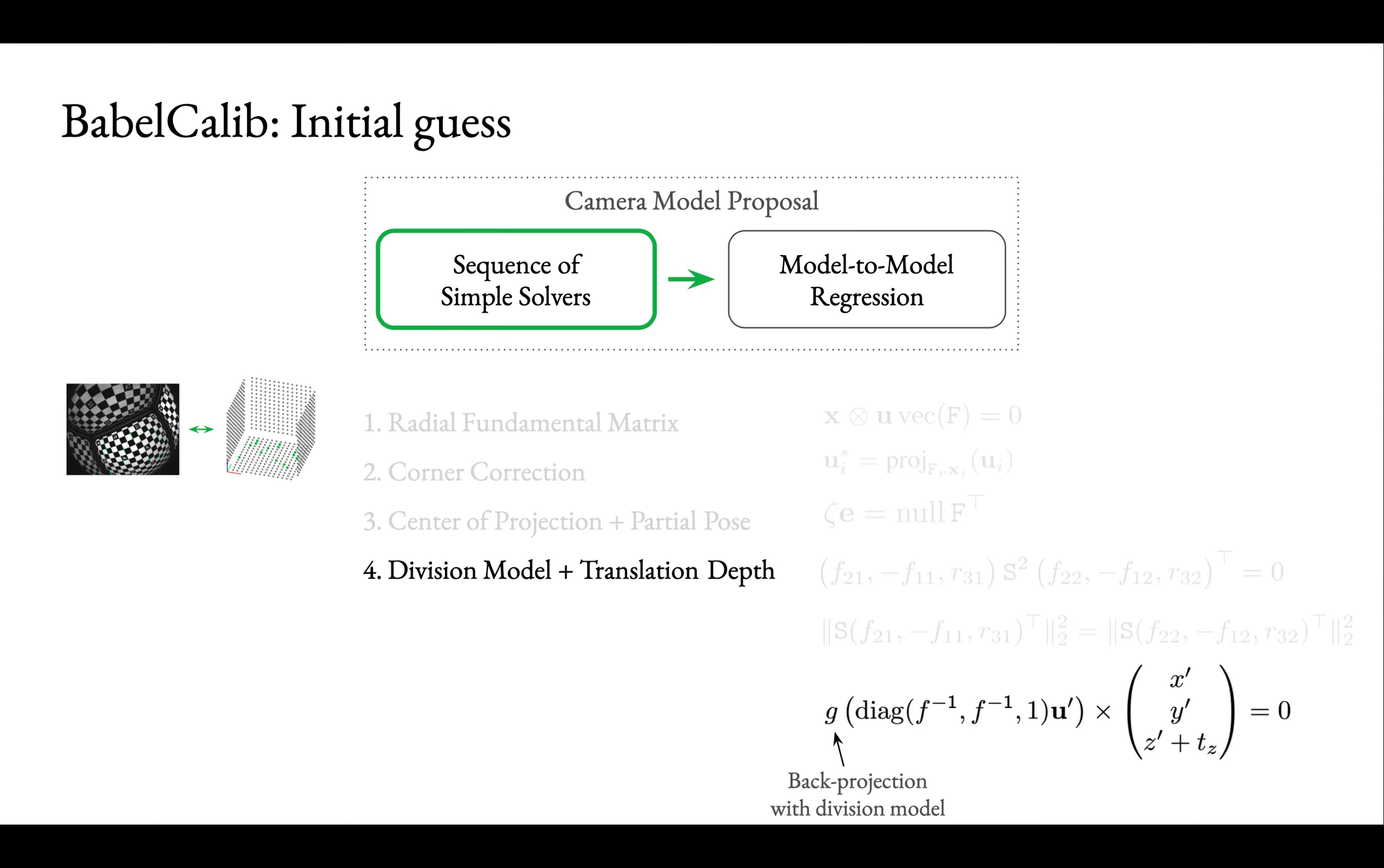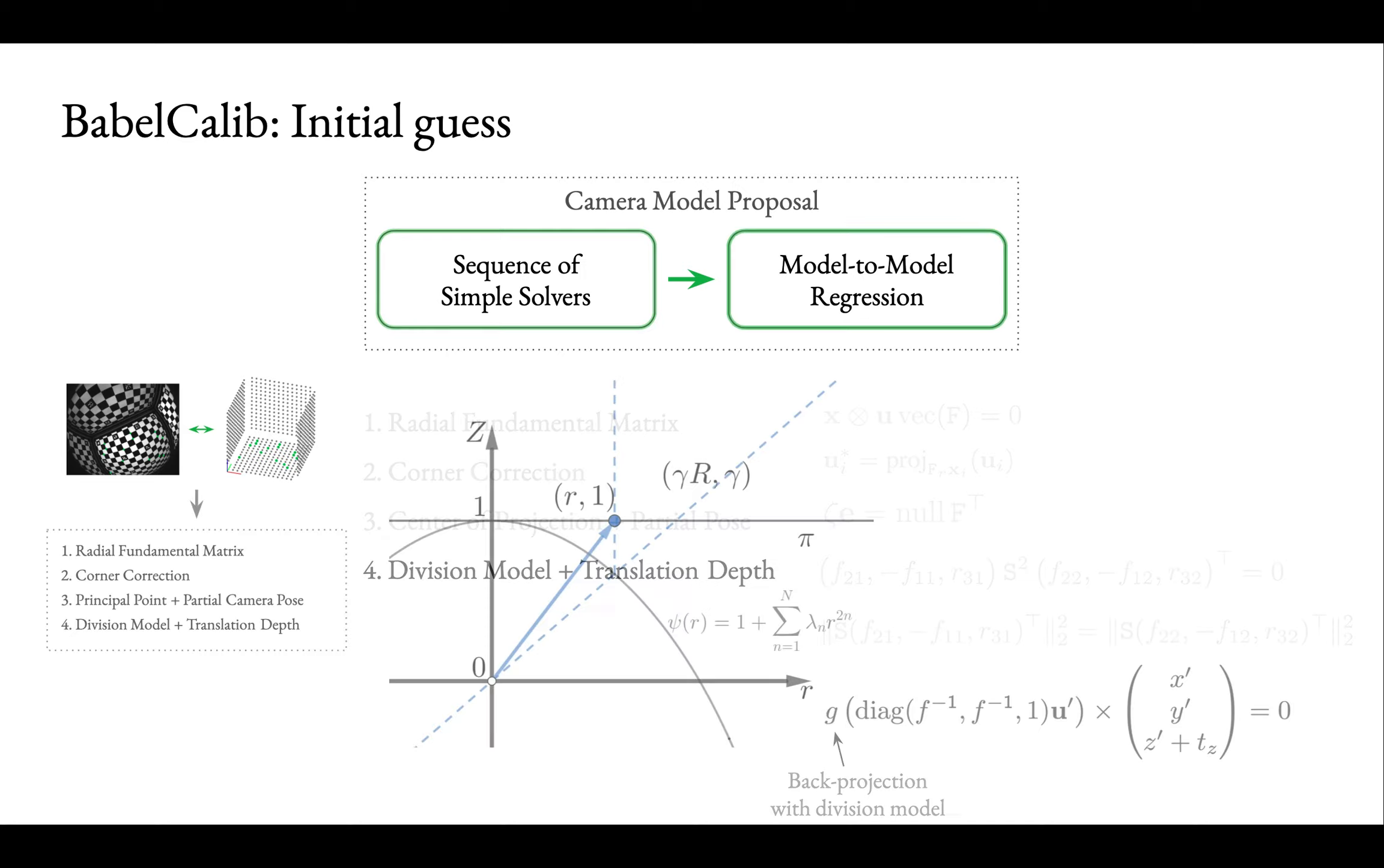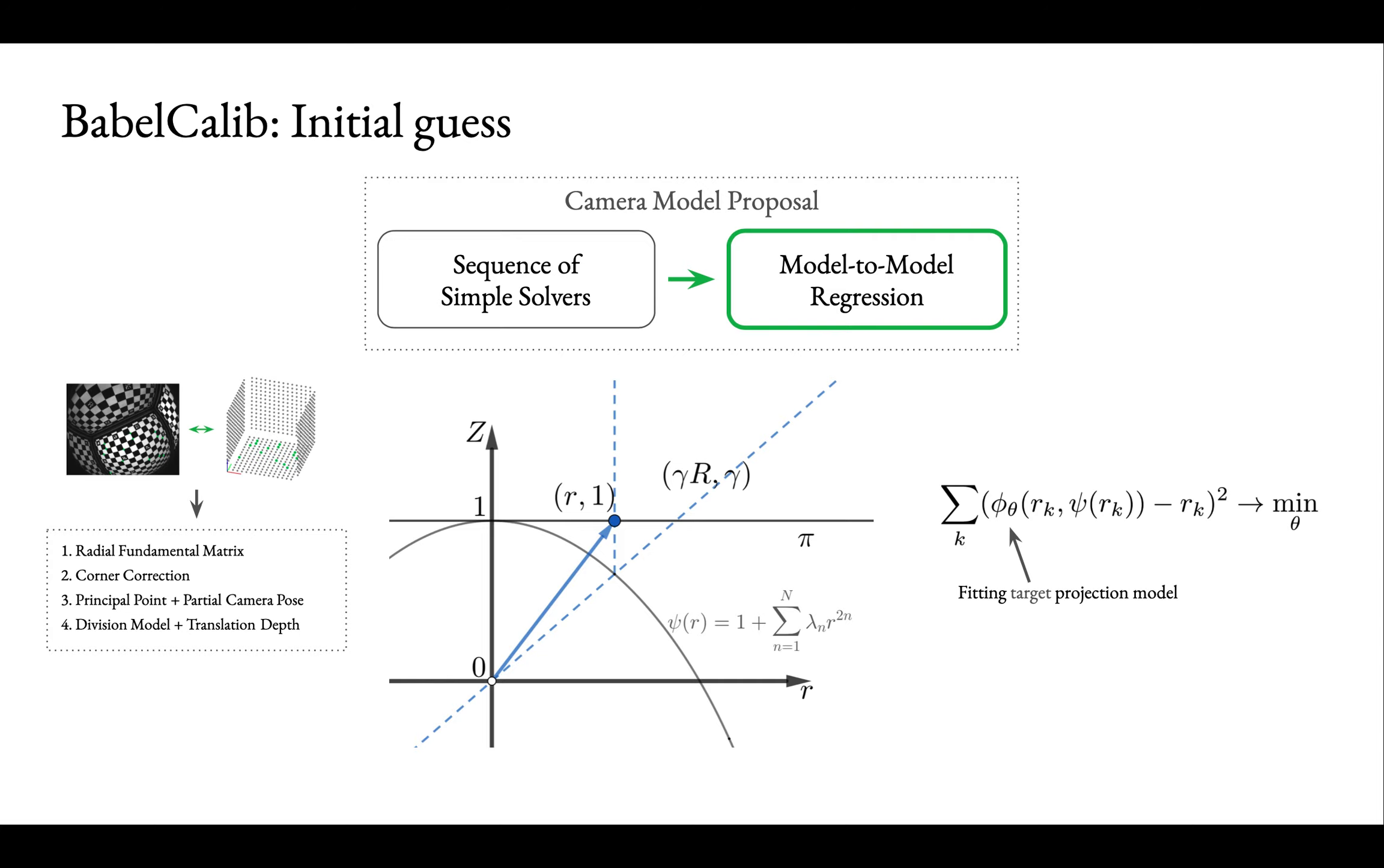We use the division back projection as an intermediate camera model, since it is sufficiently flexible for all camera and lens combinations, and it results in a linear solver. The depth is jointly estimated with the coefficients of the back projection model. Given the back projection model, we can compute the radial distance from the optical axis and the depth of the point. These are the inputs to the projection function, which maps a point to the sensor plane. This formulation gives an easy and consistent way to regress the target camera model against the division model.